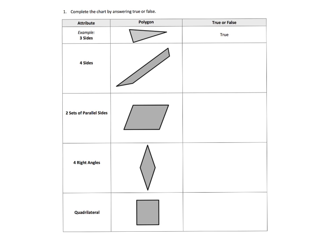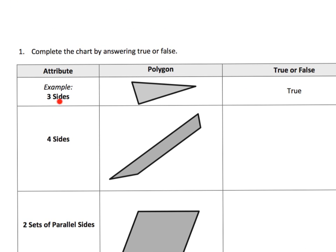So here we have this chart and we have an attribute and I'll zoom in here. At this point we have the attribute is three sides and then we're given a shape, a polygon, and we're supposed to notate whether this polygon is true given this attribute. And so in this case the answer is true because it says three sides and sure enough it does have three sides so we put true.